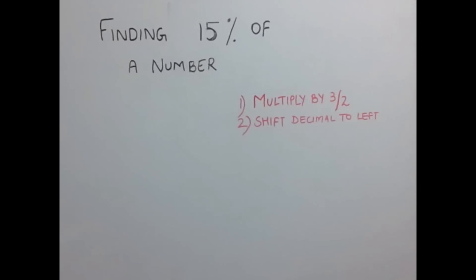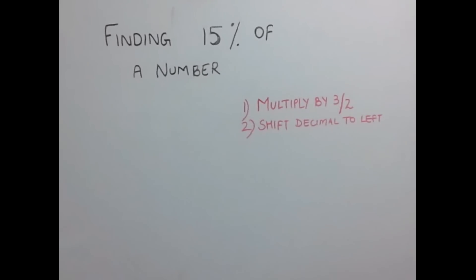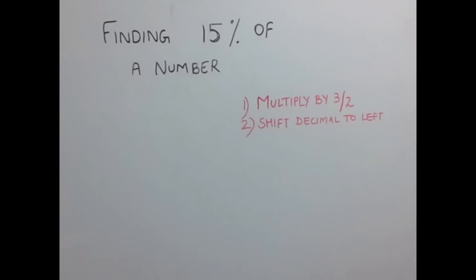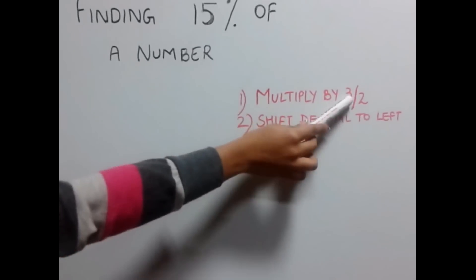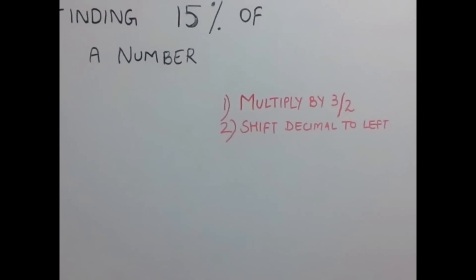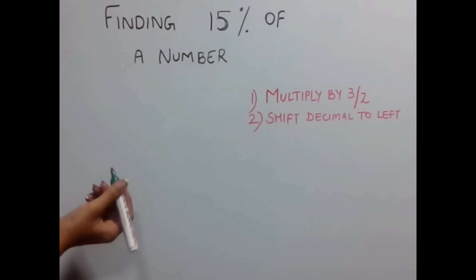Hello. Today we will be discussing our next trick, which is finding 15% of a number. To find out 15% of any number, just multiply that number by 3 divided by 2 and shift the decimal to the left. Let's understand this with an example.